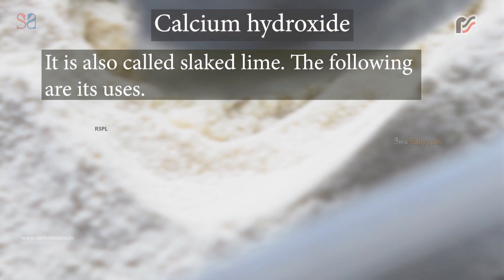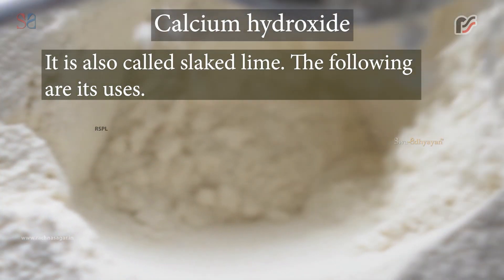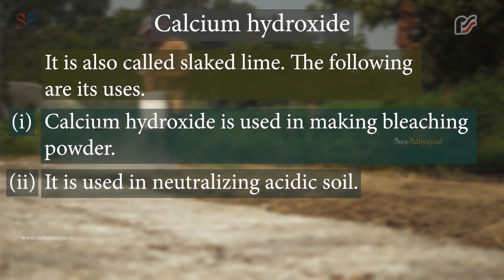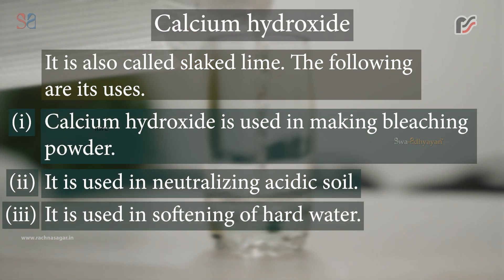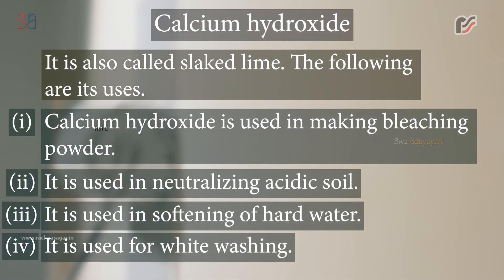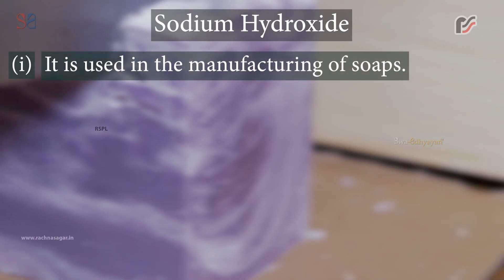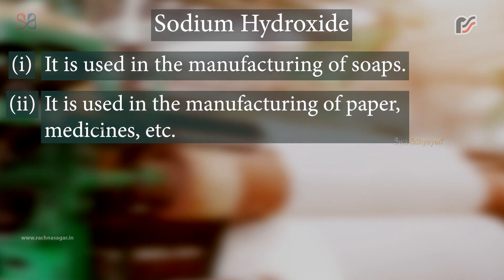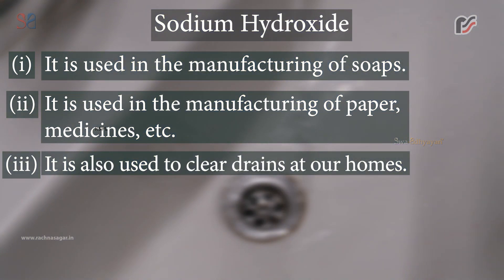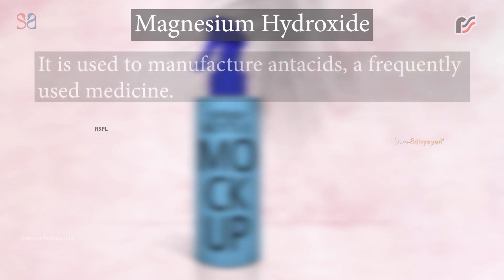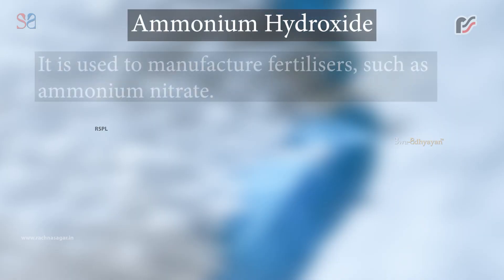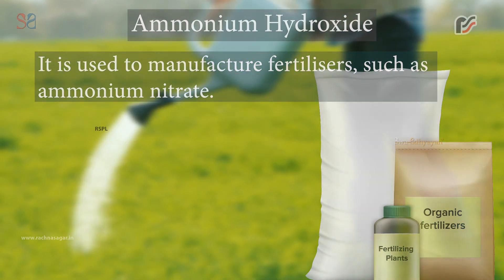Uses of bases. Calcium hydroxide (slaked lime): (1) used in making bleaching powder; (2) used in neutralizing acidic soil; (3) used in softening of hard water; (4) used for white washing. Sodium hydroxide: (1) used in the manufacturing of soaps; (2) used in the manufacturing of paper, medicines etc.; (3) used to clear drains at home. Magnesium hydroxide: used to manufacture antacids, a frequently used medicine. Ammonium hydroxide: used to manufacture fertilizers such as ammonium nitrate.